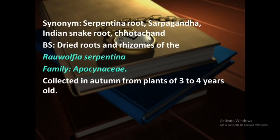The synonyms of Rauwolfia: it is known as serpentina root, also known as sarpagandha in Marathi, also known as Indian snake root and also known as chota chand. These are the four different synonyms of Rauwolfia. The source is the dried roots and rhizomes of Rauwolfia serpentina belonging to family Apocynaceae.